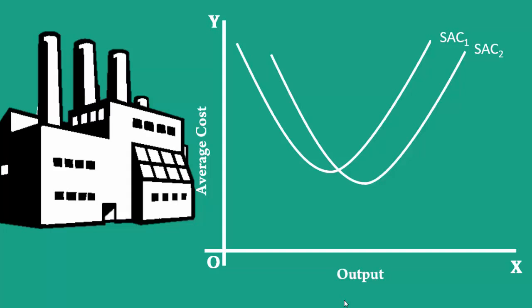For example, in short period 1, the firm uses SAC 1. In short period 2, it uses SAC 2.